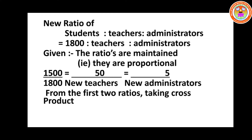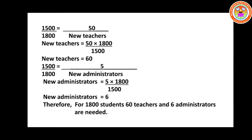Taking the first two ratios: 1500 by 1800 equals 50 divided by new teachers. Cross multiplying: new teachers equals 50 into 1800 divided by 1500. Cancel zeros: 18 by 15. Divide by 3: 6 by 5. Cancel with 50: 10 times 6 gives 60. So the new number of teachers is 60.